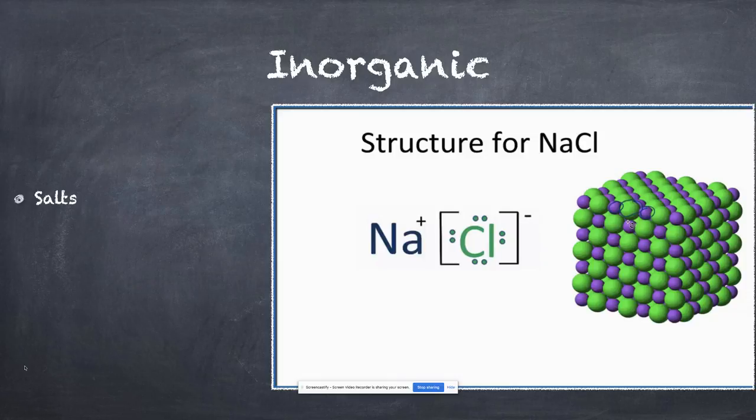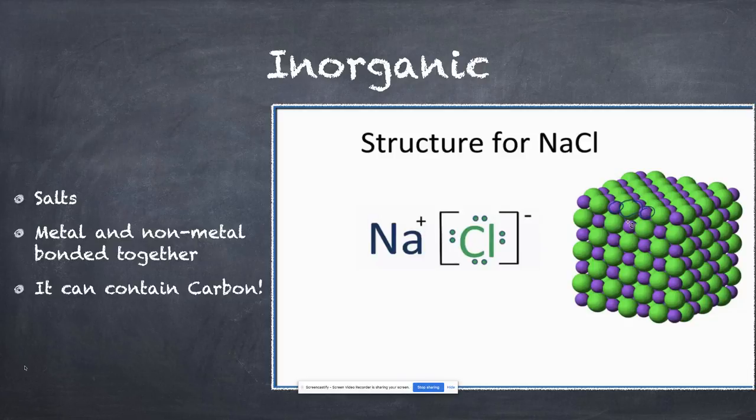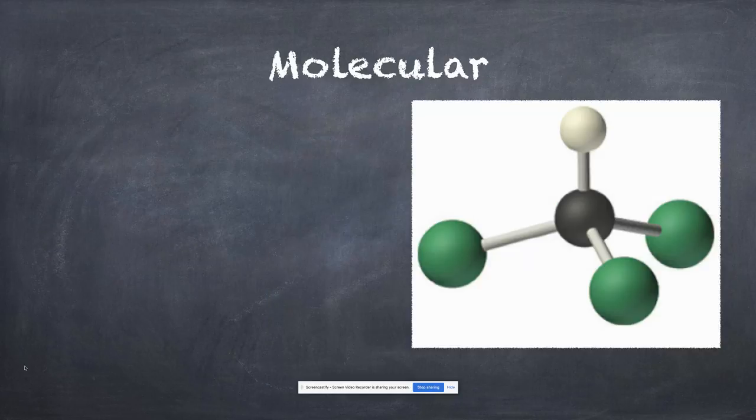Inorganic will be what we call salts, when we have a metal and a non-metal bonded together. These can contain carbon; carbon's not forbidden. It's just that organic compounds typically won't have metal with non-metal. Sodium chloride or table salt is a good example. The structure of salts, of inorganic compounds, is a little different. They don't typically exist as single molecules. They typically exist as big three-dimensional arrays, which is shown pretty nicely in this image.